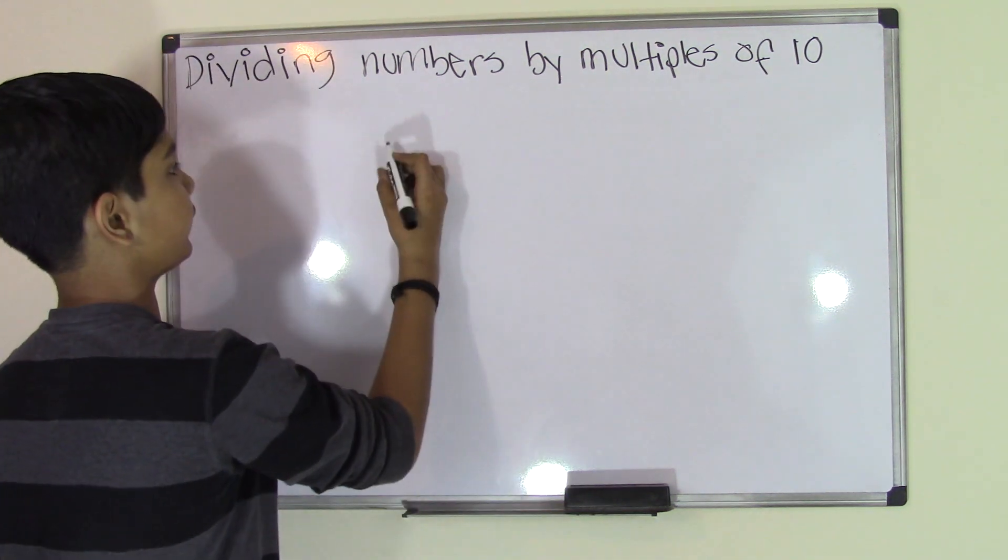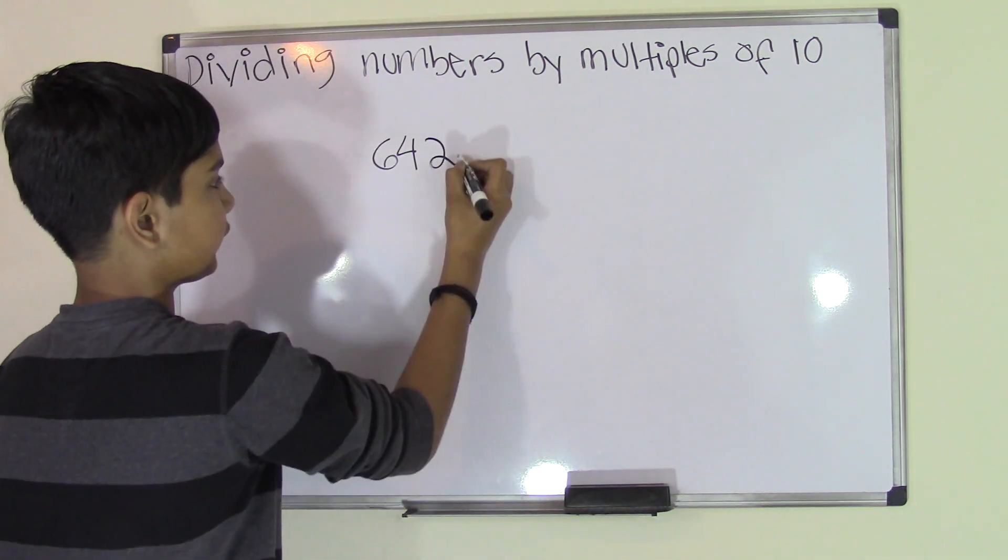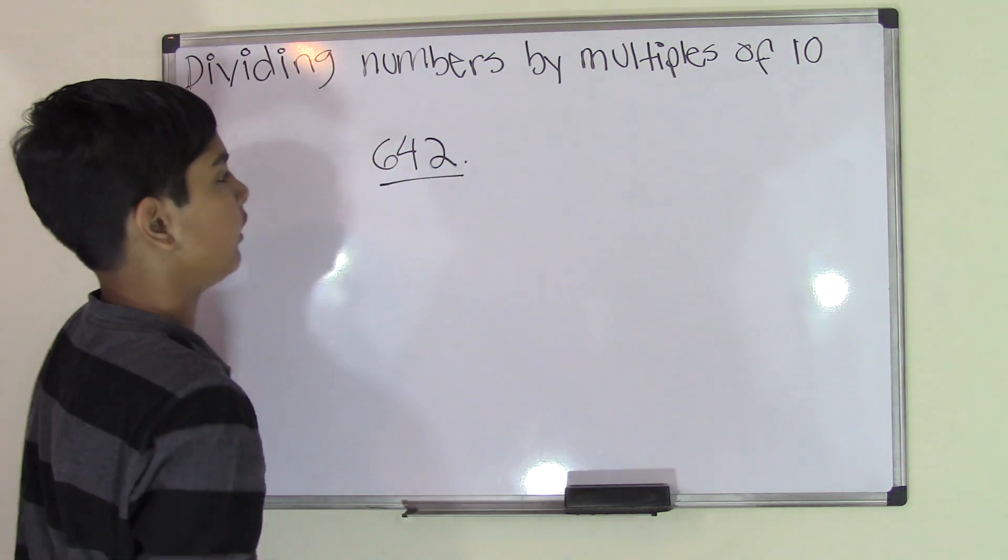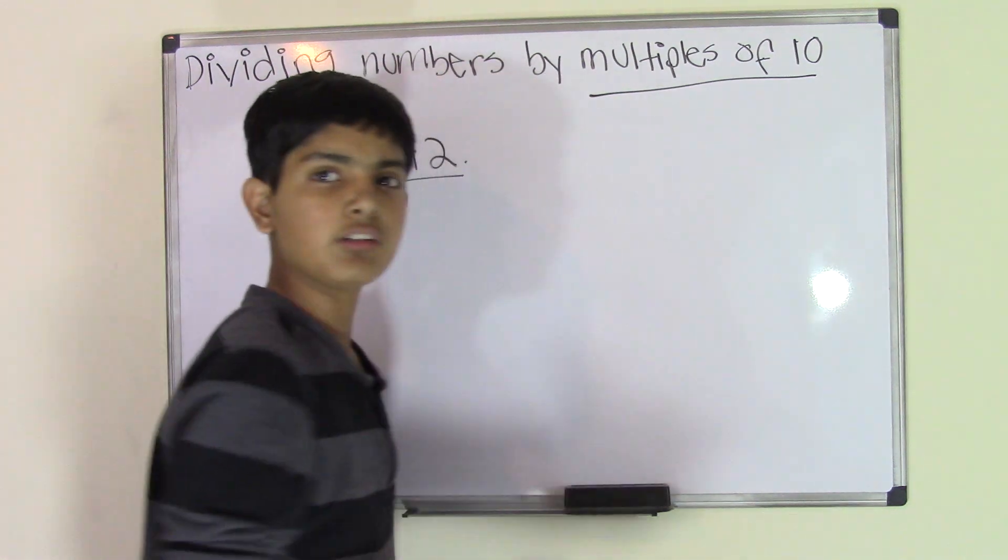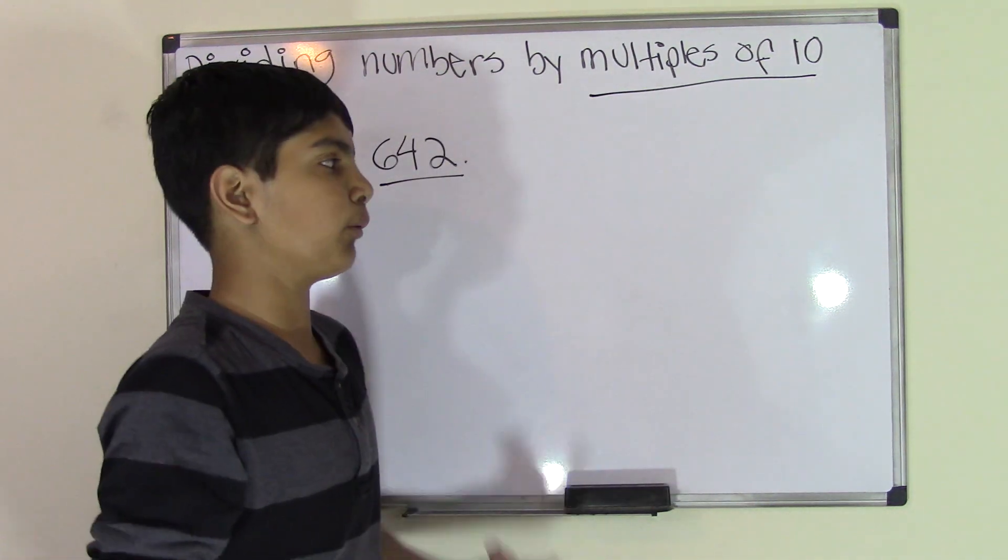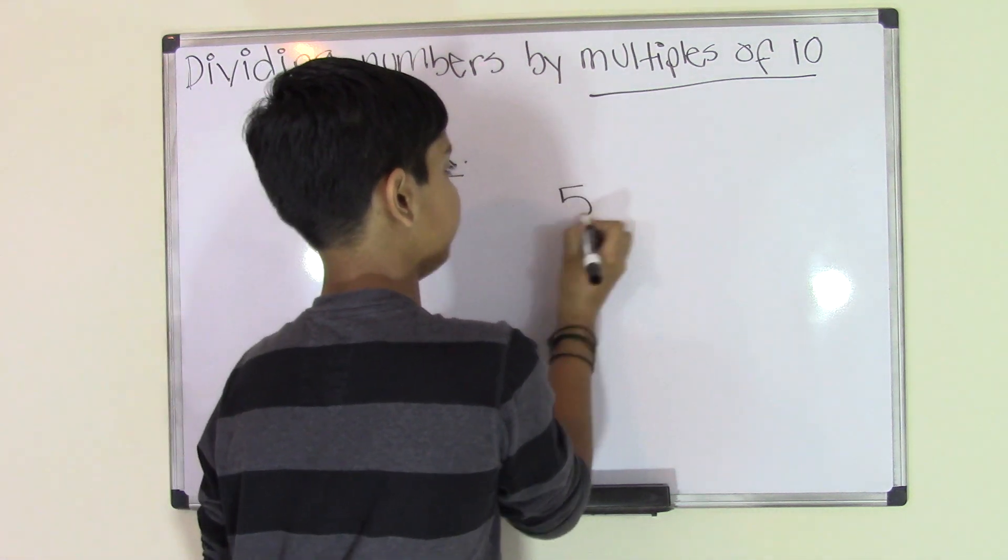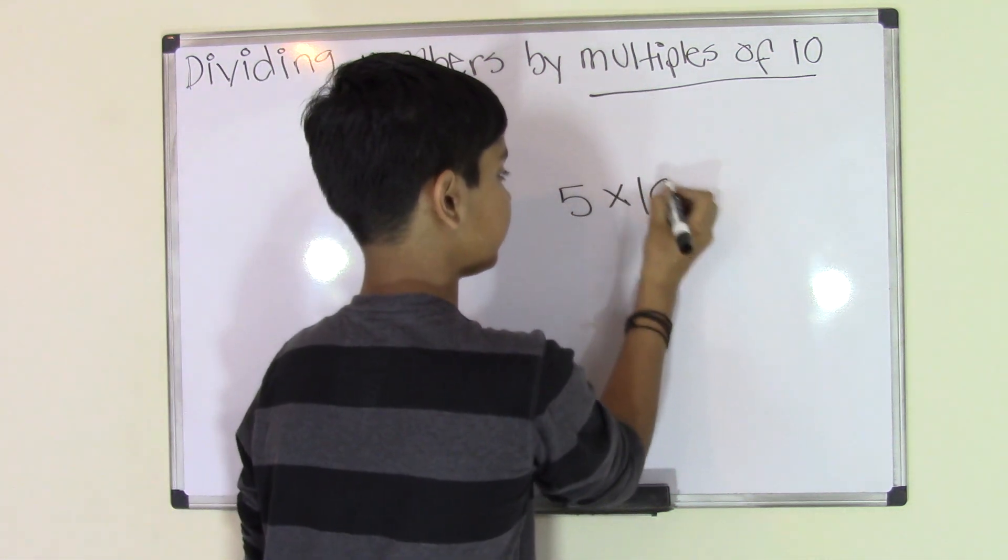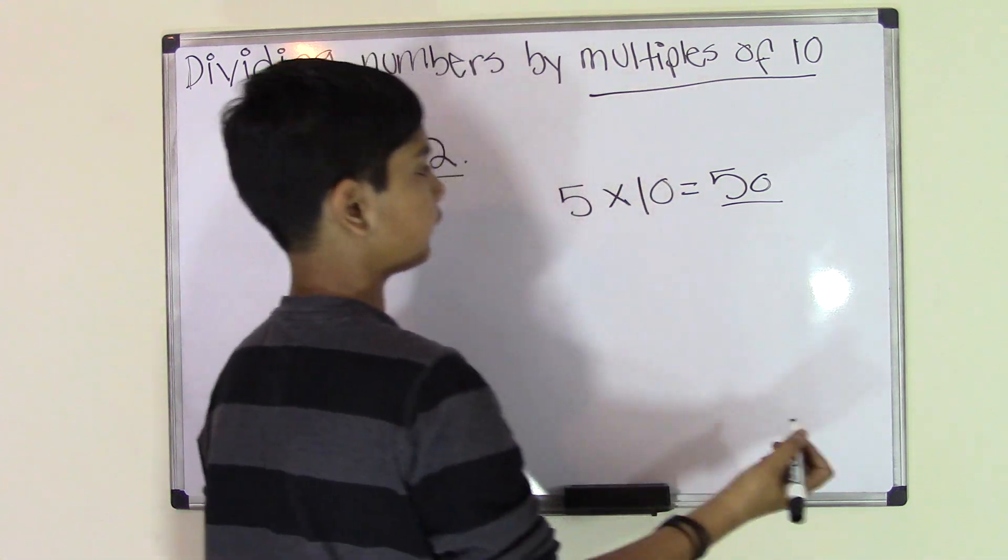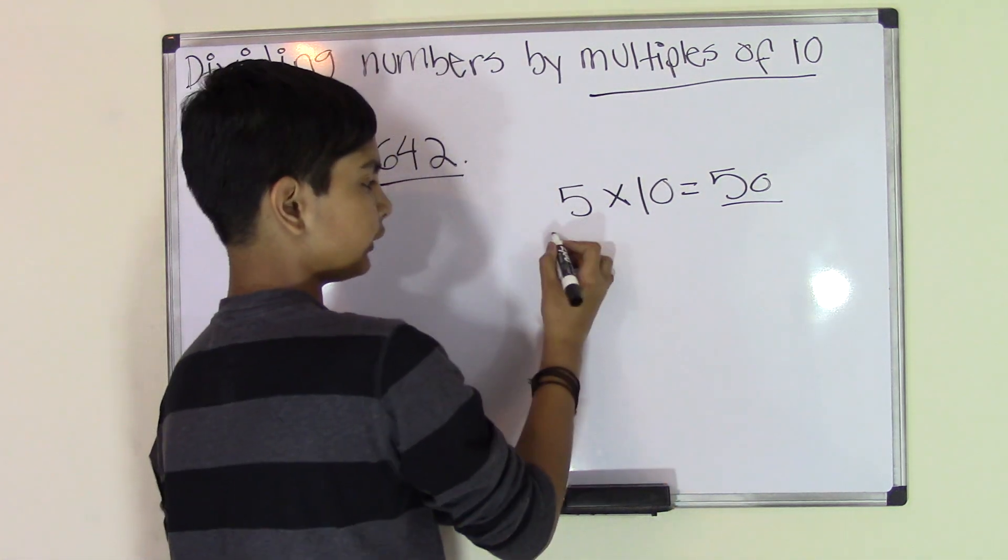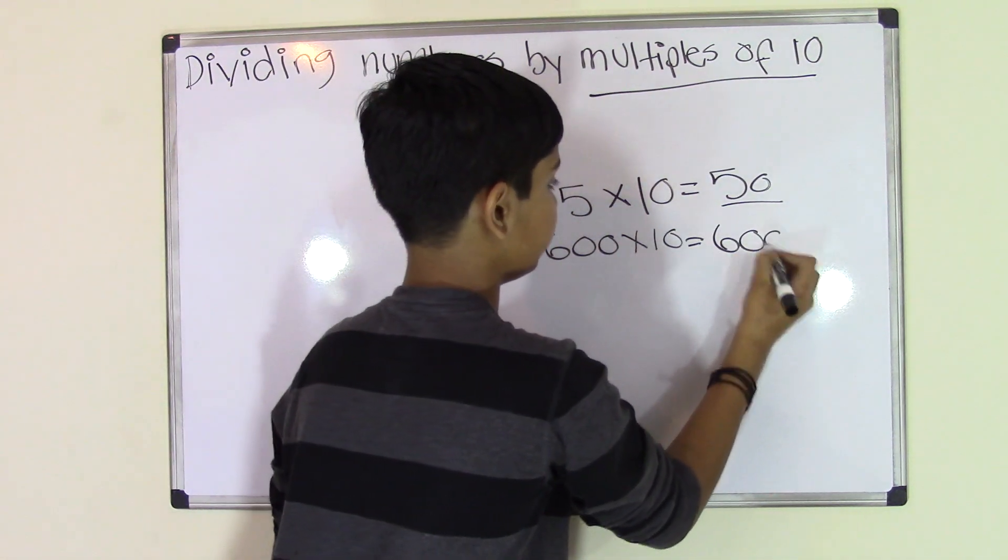Like in the hundreds. For example, we get 642, that's our number. Now, multiples of 10, what are multiples of 10? Well, multiples of 10 are any number. For example, 5 times 10, and the product will be actually the multiple of 10.